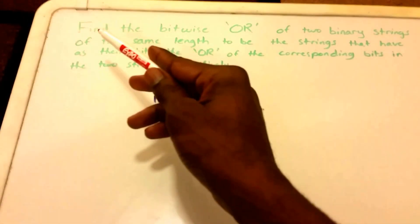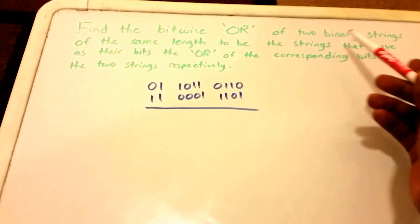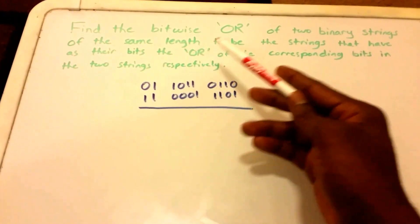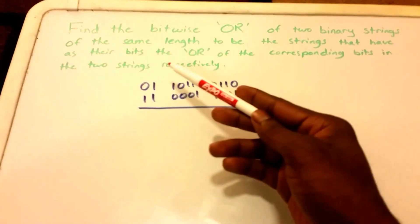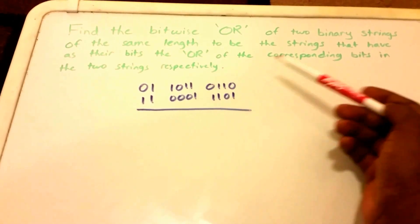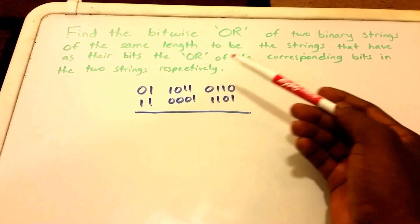So here I have a question: find the bitwise OR of two binary strings of the same length to be the strings that have as their bits the OR of the corresponding bits in the two strings respectively.